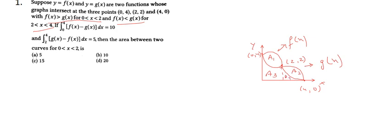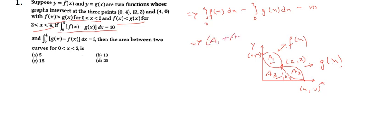We are given that the integration over 0 to 4 of [f(x) - g(x)] equals 10. Writing this out: integral from 0 to 4 of f(x) dx minus integral from 0 to 4 of g(x) dx equals 10. The area under f(x) from 0 to 4 covers A1, A3, and A4, while g(x) from 0 to 4 covers A2, A3, and A4. So we get A1 minus A2 equals 10. Let this be equation one.